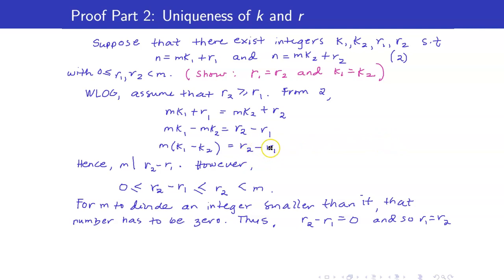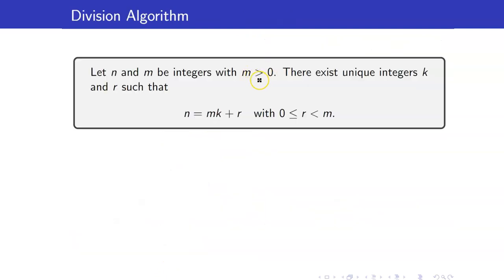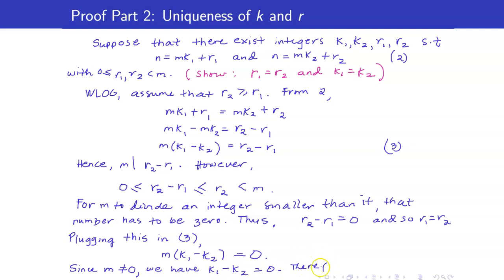If we plug r1 equals r2 back into equation m(k1 minus k2) equals r2 minus r1, we get m(k1 minus k2) equals 0. Since m is not equal to 0 (our assumption is m is strictly greater than 0), we must have k1 minus k2 equals 0, so k1 equals k2. We have shown that r1 equals r2 and k1 equals k2, proving the uniqueness of k and r.